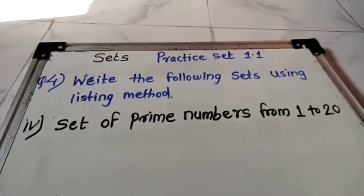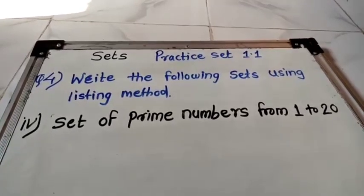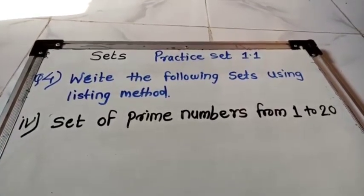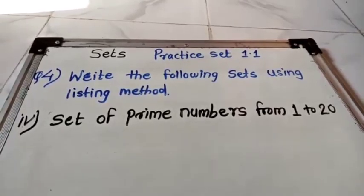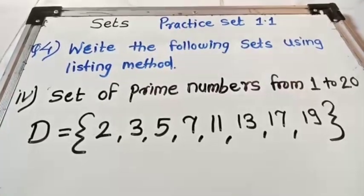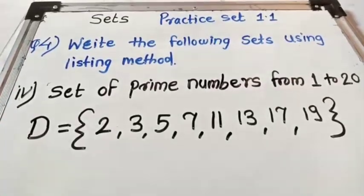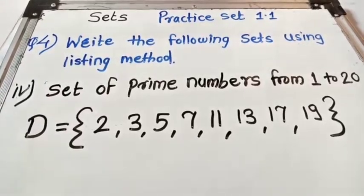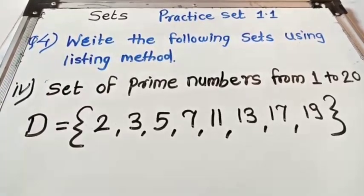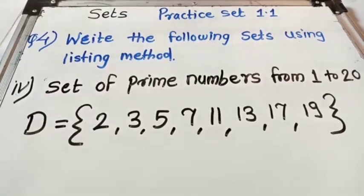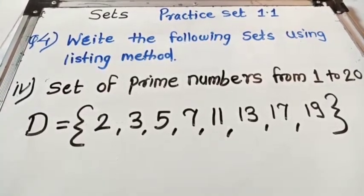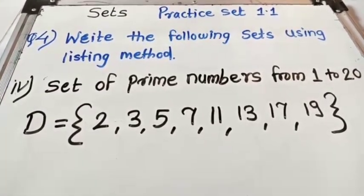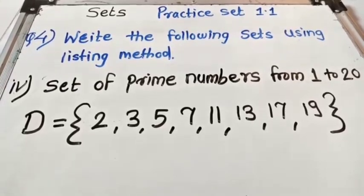Next example: set of prime numbers from 1 to 20. The answer is D = {2, 3, 5, 7, 11, 13, 17, 19}.